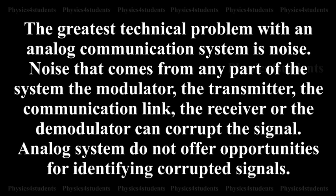The greatest technical problem with an analog communication system is noise. Noise that comes from any part of the system — the modulator, the transmitter, the communication link, the receiver, or the demodulator — can corrupt the signal. Analog systems do not offer opportunities for identifying corrupted signals.